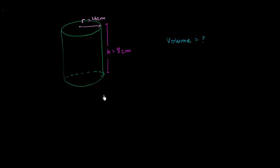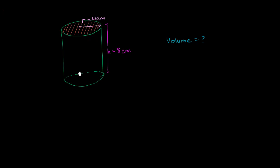The idea here is really the exact same thing that we saw in some of the previous problems. If you can find the surface area of one side and then figure out how deep it goes, you'll be able to figure out the volume. So what we're going to do here is figure out the surface area of the top of this cylinder, or the top of this soda can, and then multiply it by its height. That'll give us the volume — essentially how many square centimeters fit in this top, and then multiplied by how many centimeters we go down gives us the number of cubic centimeters in the cylinder.